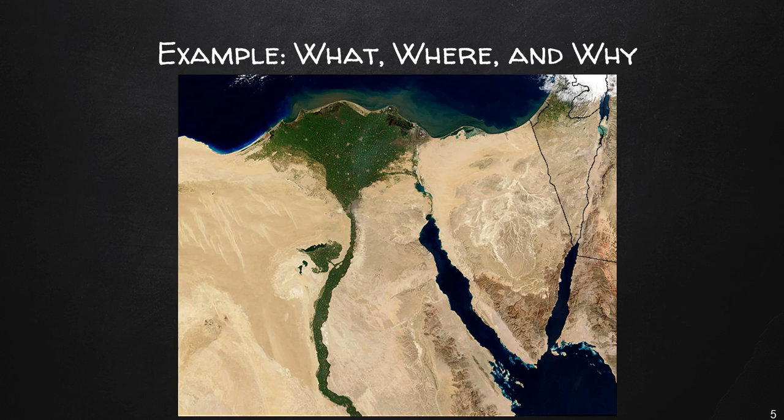Only a few miles to either side of the Nile is barren desert. To reiterate, the what, where, and why is clearly illustrated here — the location or population density of Egypt, and why it's located there is due to the fresh water source of the Nile River.